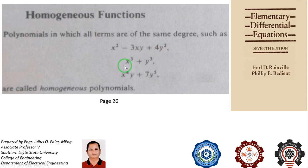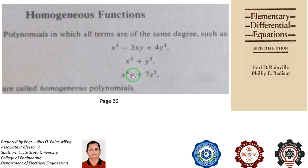The second polynomial is obviously homogeneous to the third degree because x cubed is third degree and y cubed is third degree. The third polynomial is homogeneous to the fifth degree because x to the fourth times y is fifth degree (4 plus 1), and 7y to the fifth is fifth degree since the constant 7 has no degree. Therefore, this polynomial is homogeneous to the fifth degree.